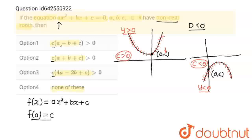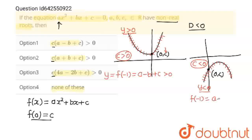Now I'm going to find the value of c(a - b + c) for both curves. I'll put x = -1 in f(x). So at x = -1, in the first graph, f(-1) = a - b + c and the y-coordinate is greater than 0. In the second graph, f(-1) = a - b + c and this will be less than 0. So for the first graph, c is positive and a - b + c is positive — positive times positive is positive, which is greater than 0. For the second graph, c is negative and a - b + c is also negative — negative times negative is positive. So for both graphs, this option is correct.